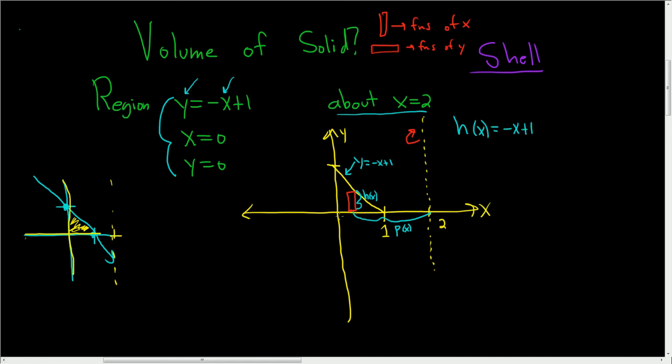To find p of x, we need to denote this by something. So this distance here is simply x. This full distance here is 2. So if you take 2 and you subtract x, you get p of x. So again, if you take 2, this distance here, and you subtract x, you get p of x. So little p of x is simply 2 minus x. And now we're ready to write down the formula for the volume.